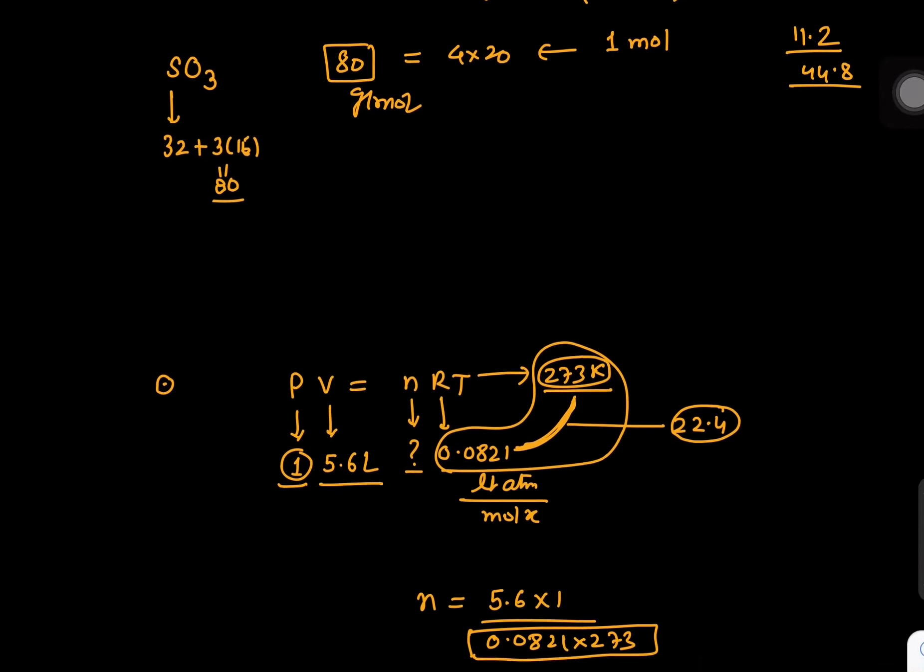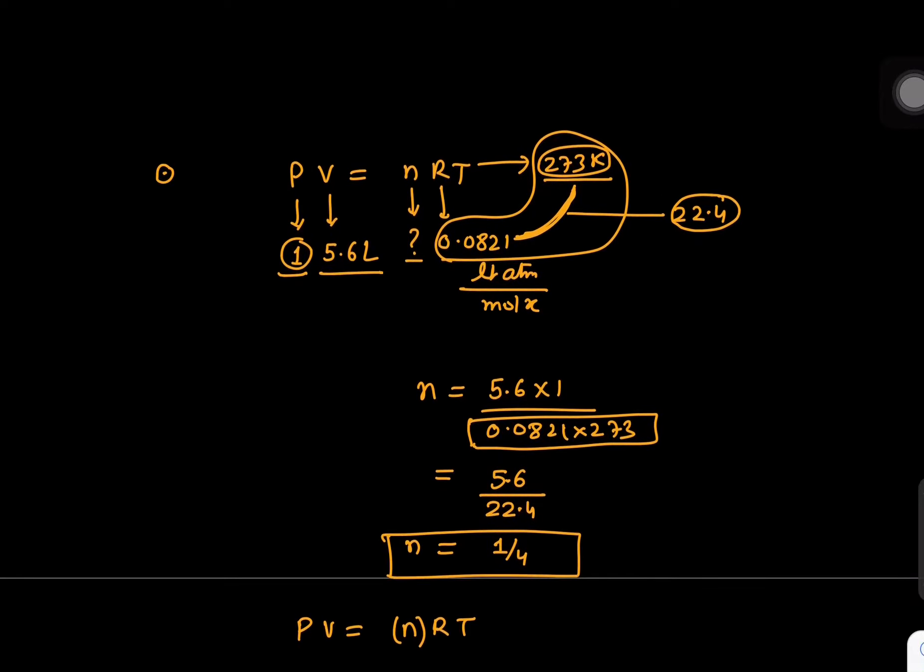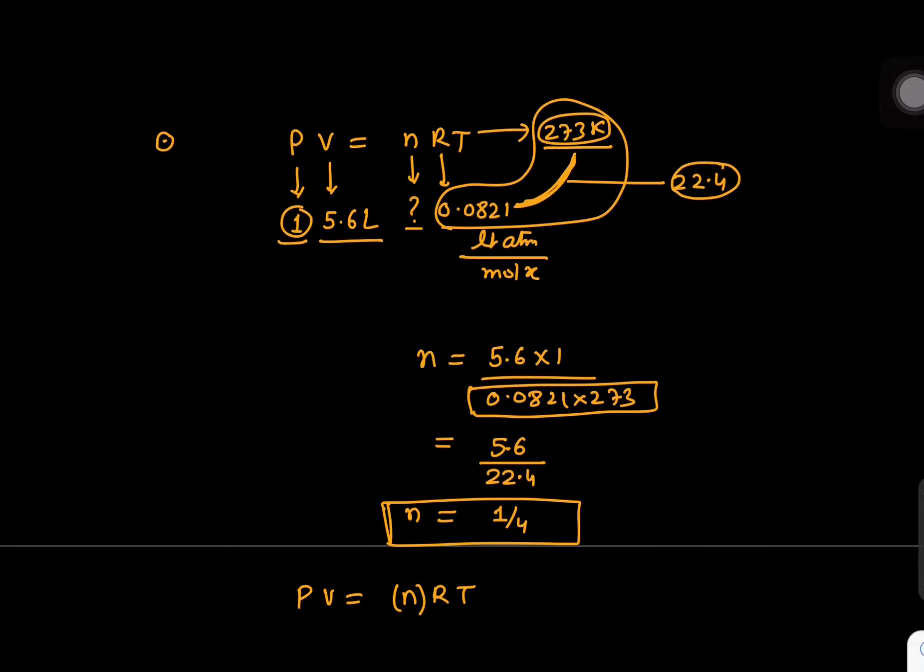We can use this method also: PV equals nRT, number of moles will come as 1 by 4 this way, and then you can say number of moles are 1 by 4, hence we can get the corresponding result.